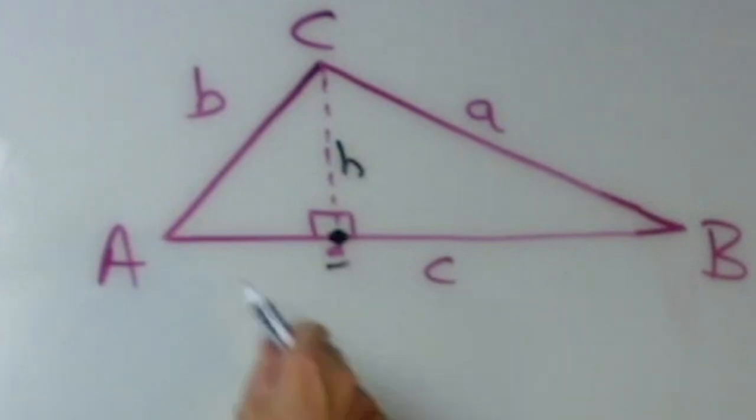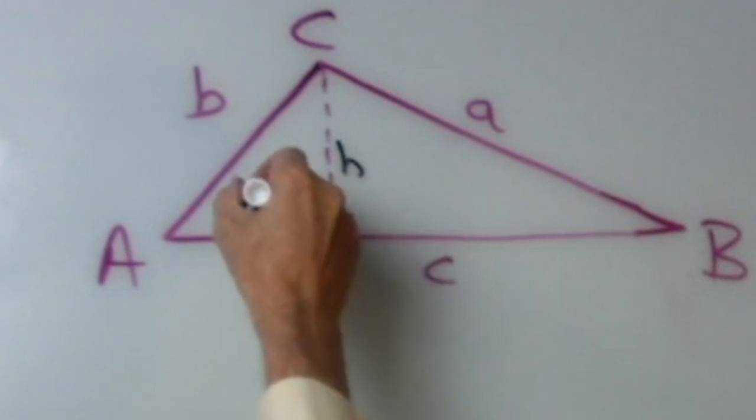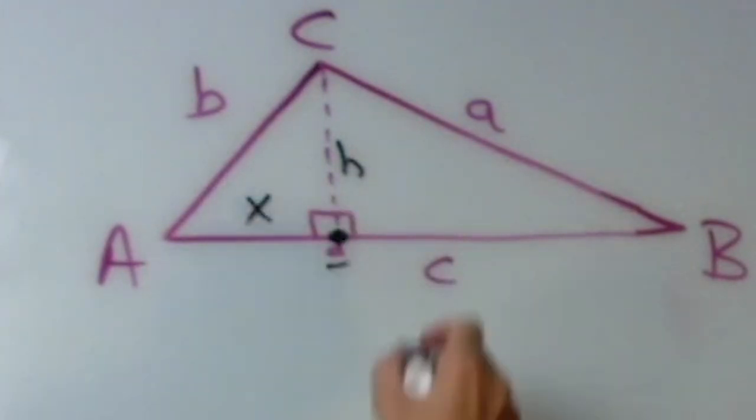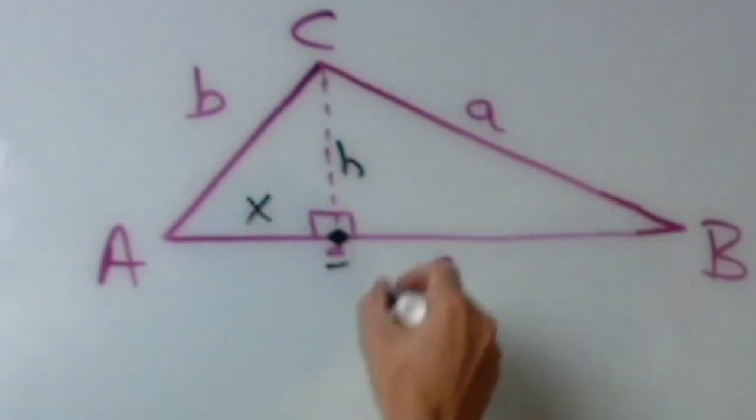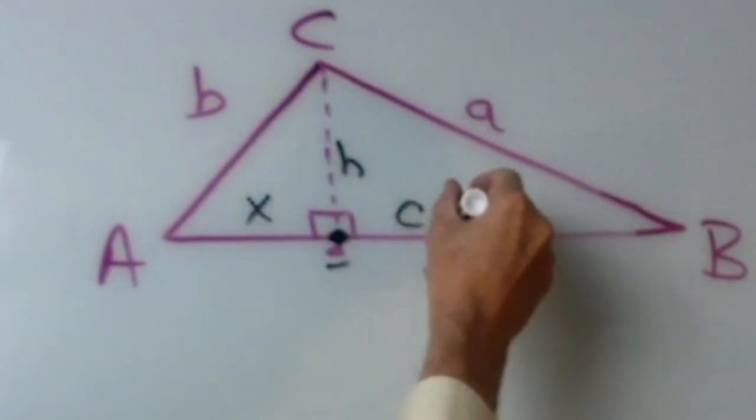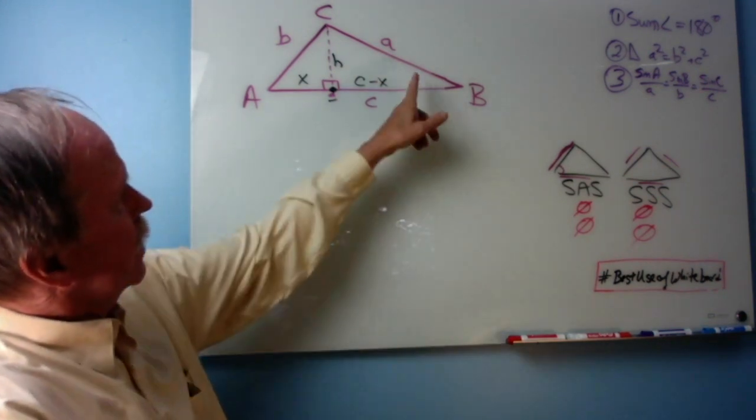Side C of the triangle is this side right here. Now, if we call this X, what's this length right here between D and B? It's C minus X.